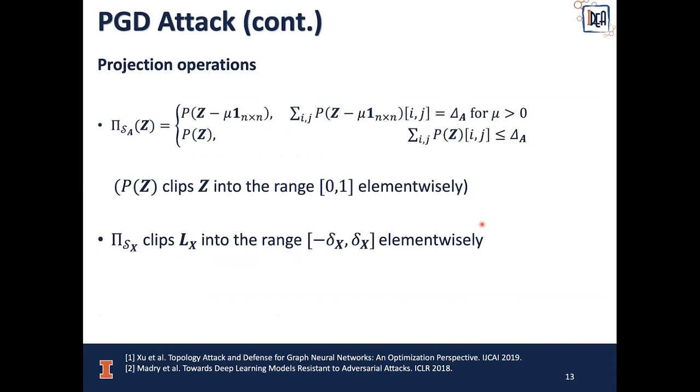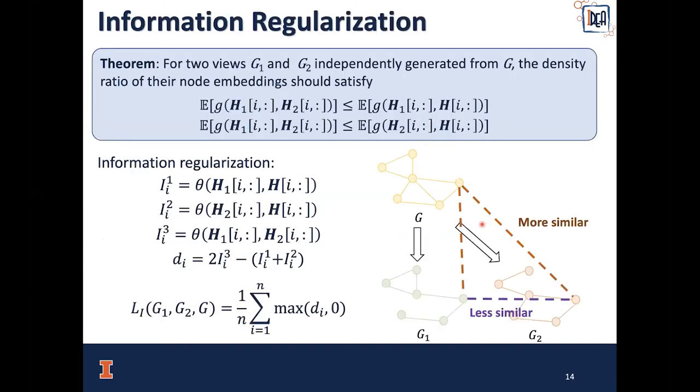Specifically for the projection operations on the adjacency matrix, we define the following projection operations. P_Z clips the input into the range 0 and 1 element-wise. If P(Z) satisfies the total amount under the constraint, then we just take P_Z as the output. Otherwise, we find the minimum mu such that after minimizing this mu from the original input element-wise and clipping, the total perturbation equals delta_A. For the projection operation on the feature perturbation L_X, we simply clip L_X into the range minus delta_X and delta_X element-wise.